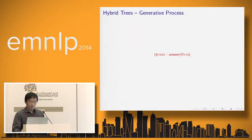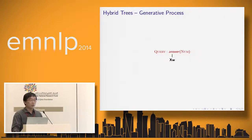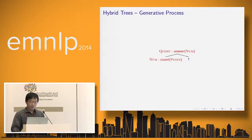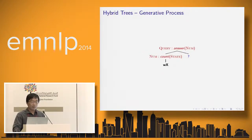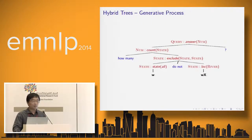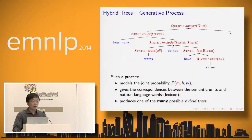Let's look at how we actually generate the hybrid tree representation. First, we generate the root semantic unit. From this semantic unit, we generate an abstract pattern — in this case, XW, where X refers to another semantic unit and W refers to a sequence of natural language words. After that, we generate the actual semantic unit and actual words. We then generate the abstract pattern below the newly generated semantic unit, generate actual words and semantic units, and repeat this process until the complete hybrid tree is generated.